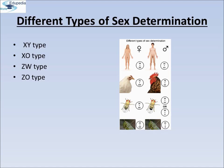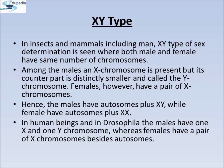The XY Type of Sex Determination. In a number of insects and mammals including humans, the XY type of sex determination is seen, where both males and females have the same number of chromosomes. Among the males, an X-chromosome is present but its counterpart is distinctly smaller and called the Y-chromosome. Females, however, have a pair of X-chromosomes. Both males and females have the same number of autosomes. Hence, males have autosomes plus XY, while females have autosomes plus XX genotype. In human beings and in Drosophila, males have one X and one Y chromosome, whereas females have a pair of X-chromosomes besides autosomes.